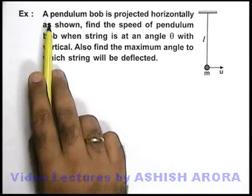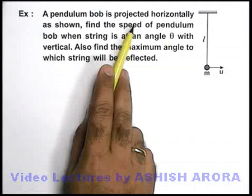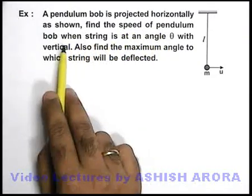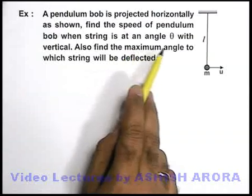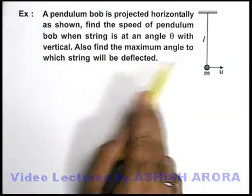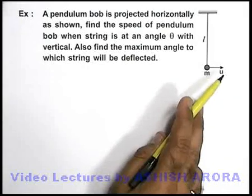In this example, we are given that a pendulum bob is projected horizontally as shown. Find the speed of pendulum bob when string is at an angle theta with the vertical. We are also required to find the maximum angle to which string will be deflected.